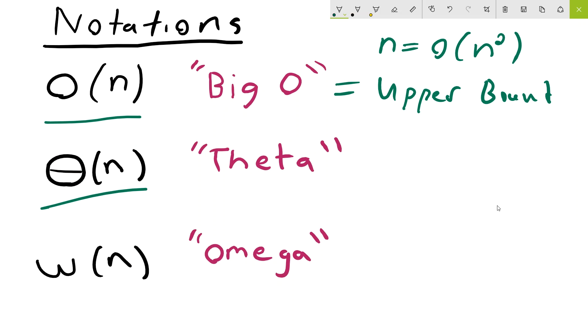Next we have theta of n. Theta of n represents a tight bound. So what this means is that in algorithms we don't care about constants. We really just care about that asymptotic behavior, and when you have a really big input, the constants don't really matter. So let's say we have the functions n, 3n, and 5n.